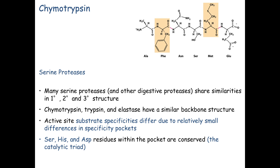Serine proteases share features in their active sites. A serine is clearly involved, as the name implies, and they have a similar overall shape. Their primary, secondary, and tertiary structures, while not exactly the same, are very similar — they share a similar backbone. Some amino acids are changed here and there, but three in particular are always conserved: an aspartate, a histidine, and a serine. We call that the catalytic triad.